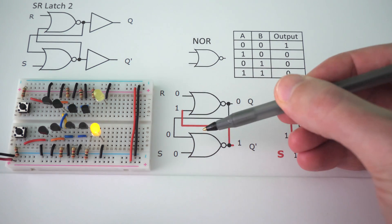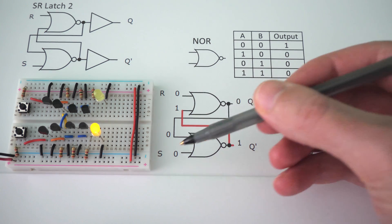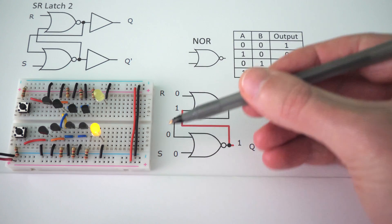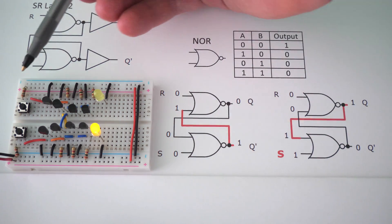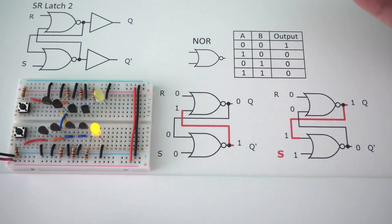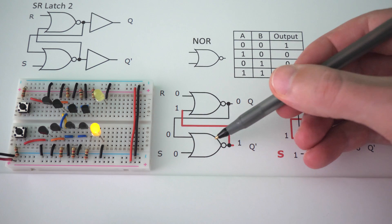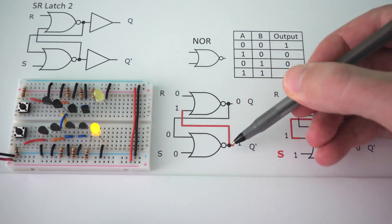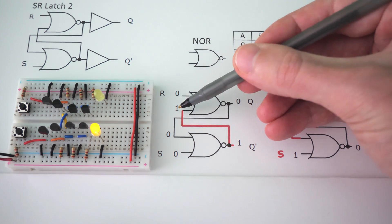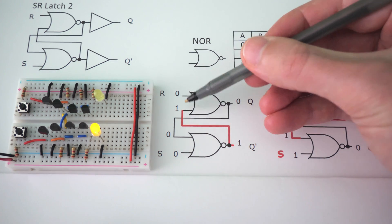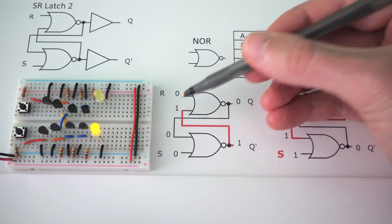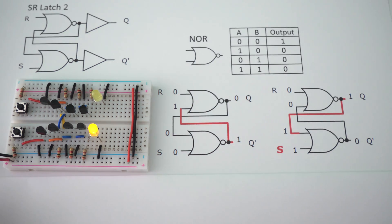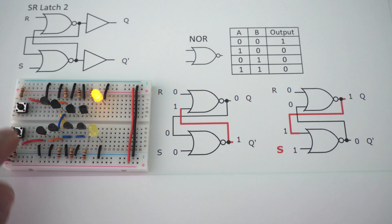This is the current state of our circuit. We can see that set and reset are both zero because the push buttons are not being pushed. The output of our bottom NOR gate is on, and it comes up and makes it so that this pin of our top NOR gate is also on. Now let's look at what happens whenever we press our set button.